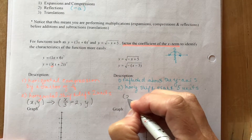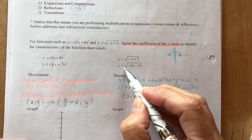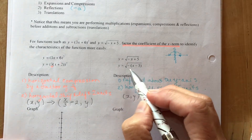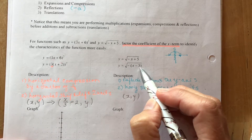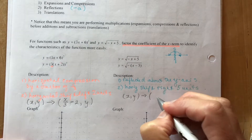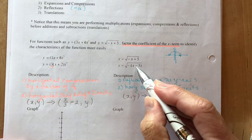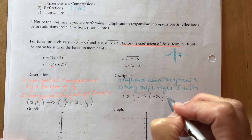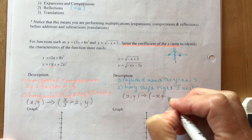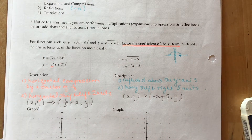For the square root example, the same applies — nothing happened to y. The mapping rule is: x goes to negative x plus 5, and y stays unchanged. We multiply x by negative one and then add 5. Since everything is inside the bracket or under the radical, these are only changes to x.